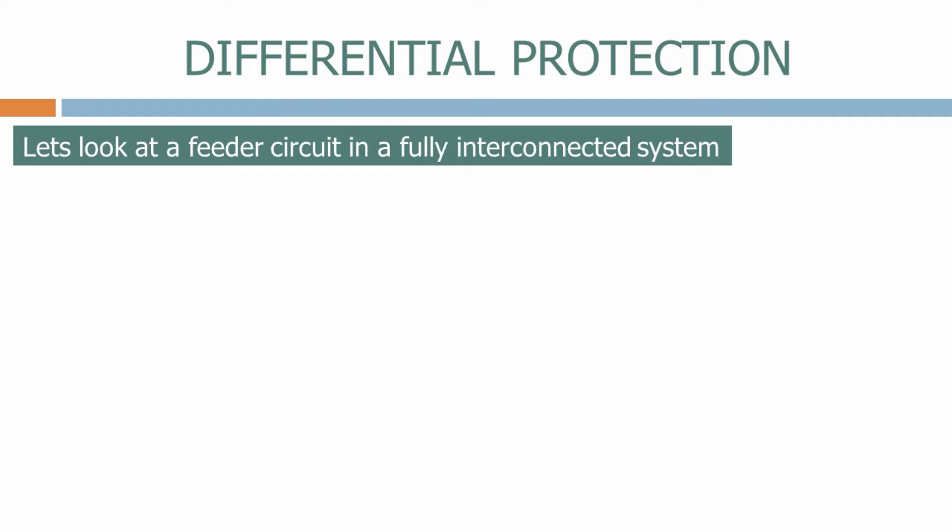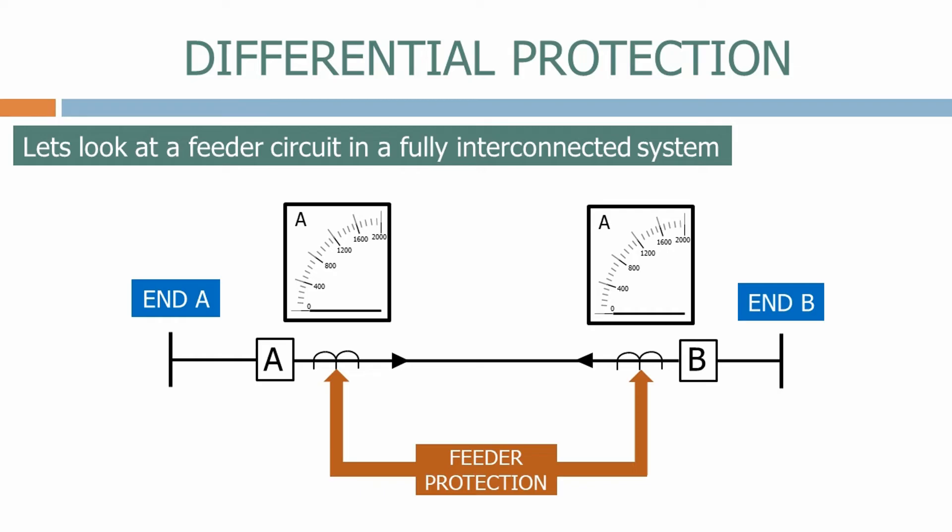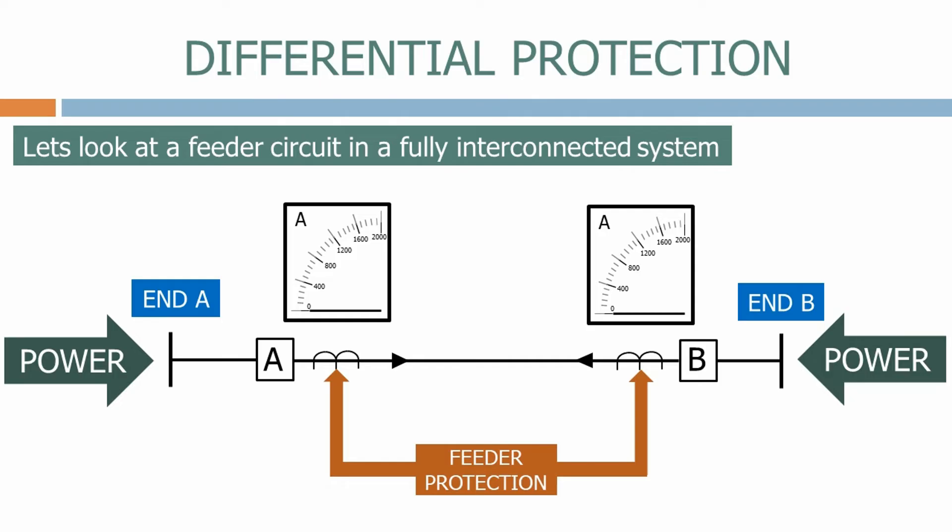Let's now look at a feeder circuit in a fully interconnected system. The main difference between this feeder and the previous feeder is that power can now flow into the circuit from both ends. How can this happen? Well, let's look at a typical transmission network.